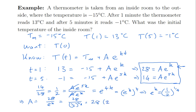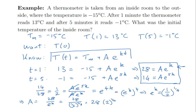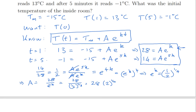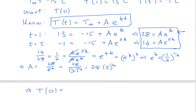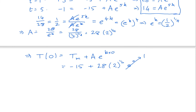So A = 28 times 2^(1/4). We've found e^k and we've found A, so we know everything. Coming back to the solution: the question asks for the initial temperature, meaning T(0). Plugging in: T(0) = Tm + A·e^(k·0) = −15 + 28·2^(1/4)·e^0 = −15 + 28·2^(1/4). Getting out a calculator, that comes out to be 18.3 degrees.